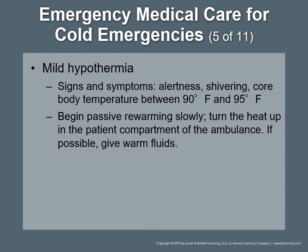Mild hypothermia — signs and symptoms: alertness, shivering, responds appropriately, core body temperature between 90 and 95 degrees. Treatment is to begin passive rewarming slowly. Turn the heat up in the patient compartment of the ambulance. Use caution to avoid burns and rewarm the patient slowly. If possible, give warm fluids by mouth.